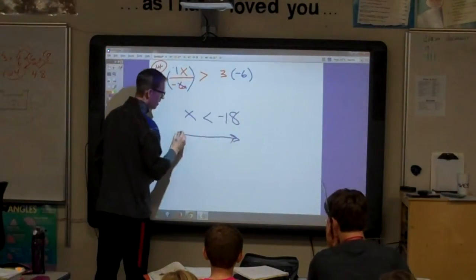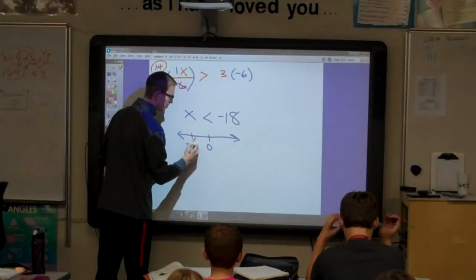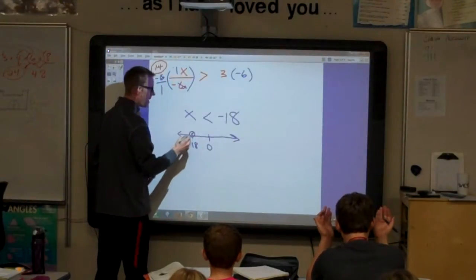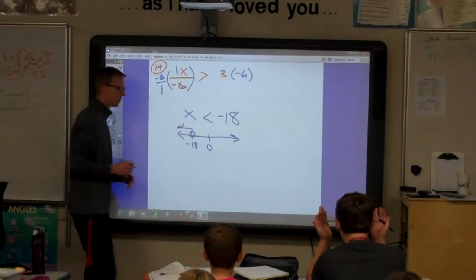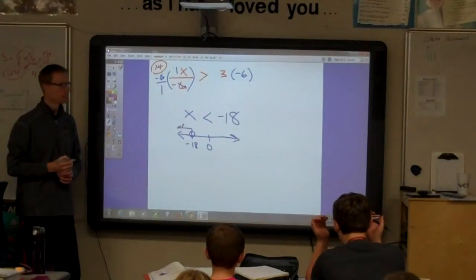Mark negative 18 on a number line. Open dot. Shade to the left.